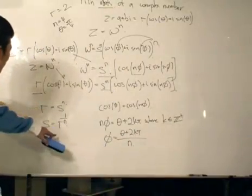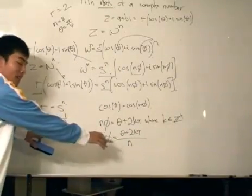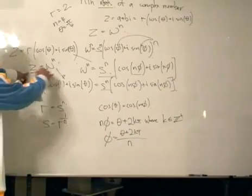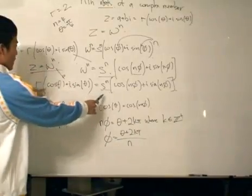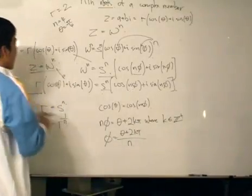We can write n phi is equal to theta plus 2k pi, where k is an integer. Let's just put positive for now. Okay, and switching it over, phi equals to theta plus 2k pi divided by n. Okay, so we've got the value of phi, we've got the value of s. This, like I explained again, comes from equating these two numbers together. We're equating the magnitude, equating the argument, and this is what we get.